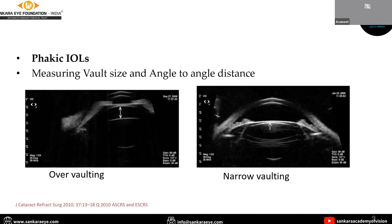In phakic IOLs, the anterior segment OCT can be used to measure the vault size. Here we can see the distance between the posterior part of the phakic IOL and the anterior natural lens — it has increased, so over-vaulting is present in this case. In another case, there is a very narrow vault.